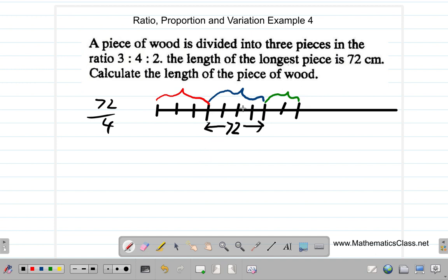So we have 1, 2, 3, 4. We can divide 72 into 4 equal parts. So 72 divided by 4 is equal to... 4 into 7 goes 1 time and 3, 4 into 32, 8, so it is 18. Each part is 18 centimeters.